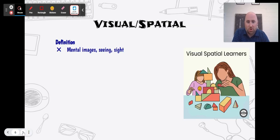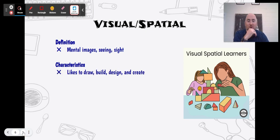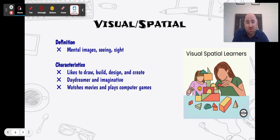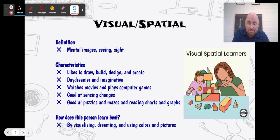Our next one is visual spatial learners — people who are good with mental images and seeing how things fit together. You can just look at something and kind of get it. You're going to like to draw, build, design, and create — think architects. You're daydreamers, imaginative, probably good at drawing, you love movies, computer games, and sensing when something doesn't look right. You're good at puzzles, mazes, reading charts, sudoku, and crossword puzzles. This person learns best by visualizing, dreaming, and using colors and pictures.